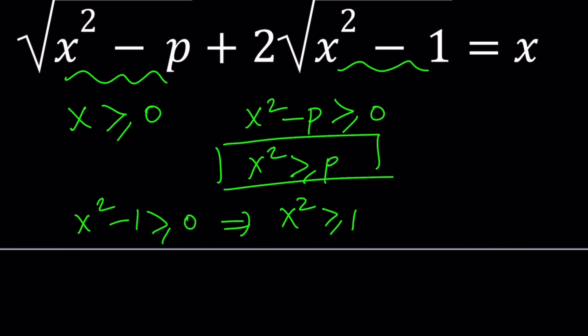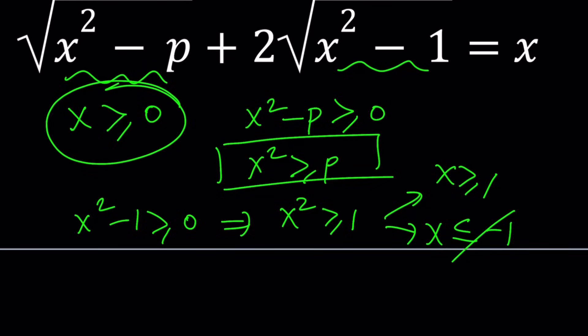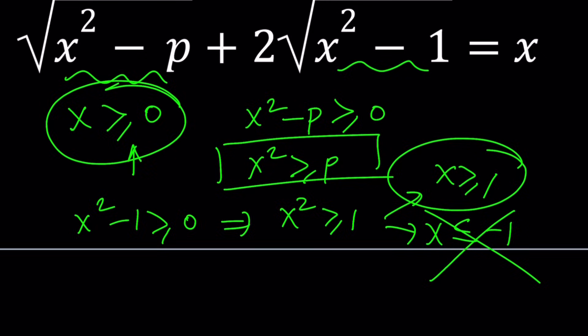The condition x squared ≥ 1 implies either x ≥ 1 or x ≤ −1. But since x must be greater than or equal to zero, we cannot use x ≤ −1. So we have to go with x ≥ 1, which already covers the positivity requirement.